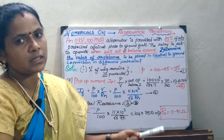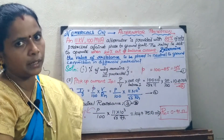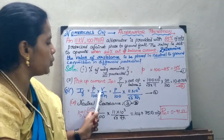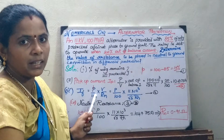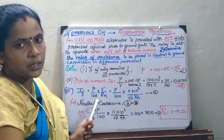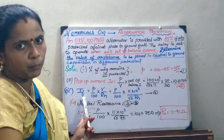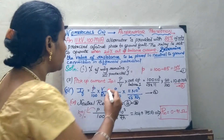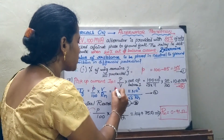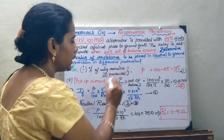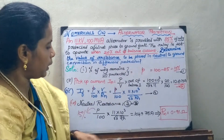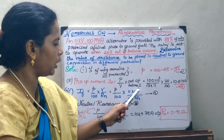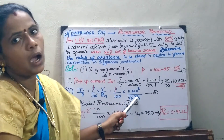The next step is to find out the fault current. I = V / Rn, multiplied by the percentage of the winding that remains unprotected. That gives the fault current magnitude. So it is P/100 multiplied by the voltage value — 11 × 10³ divided by √3 — divided by Rn.